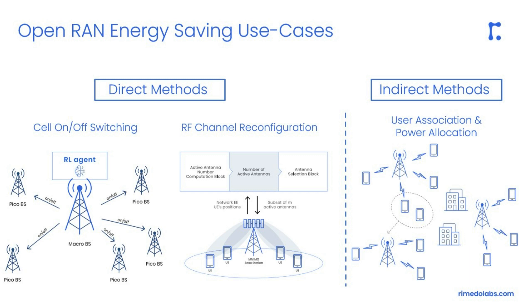In contrast, the indirect methods are focused on providing energy savings through network management mechanisms in order to utilize hardware more efficiently. An example of such mechanisms is to rearrange user-to-cell associations so as to balance load, which can provide energy savings from the network perspective when radio resources are utilized more efficiently.